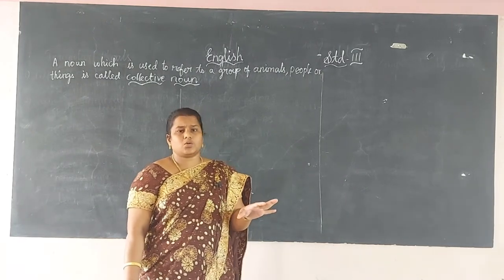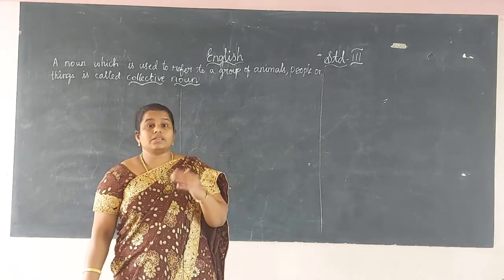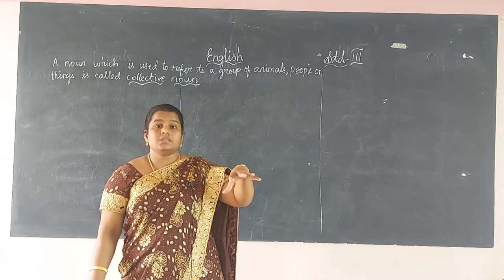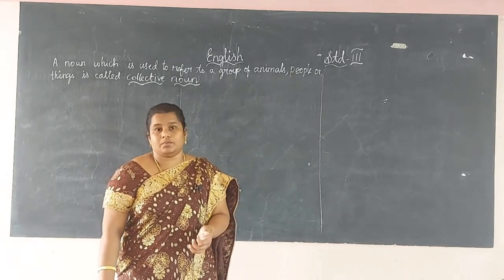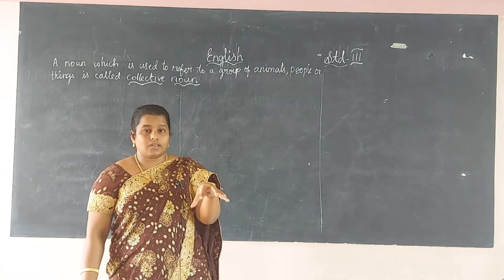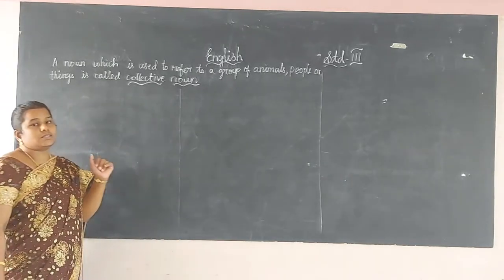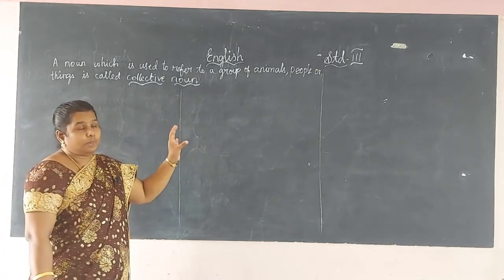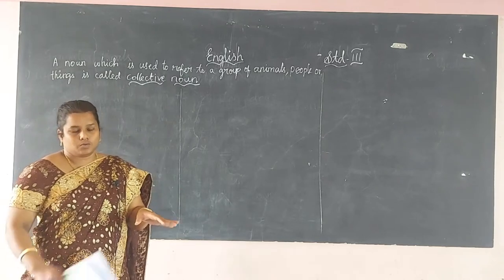A collective noun means a group — a group of people or a group of animals. For example, if one man is standing, we say 'a man.' But a group of men standing means we say 'people' or 'crowd of people.' Similarly, one monkey is 'monkey,' but a group of monkeys is called a 'troop of monkeys.' A group of animals, people, or things is called a collective noun.